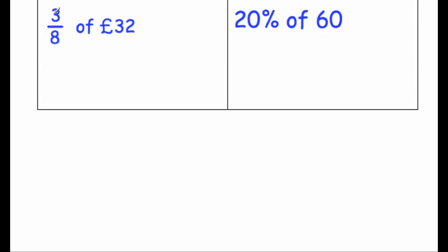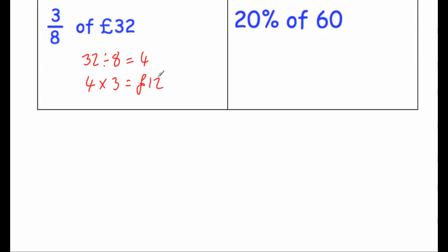Our next question: we've got to work out 3 eighths of £32. So we're going to take 32 and divide by the denominator — 32 divided by 8 is equal to 4 — and then we're going to times it by the numerator, so 4 times 3, and 4 times 3 is equal to 12, so the answer would be £12.